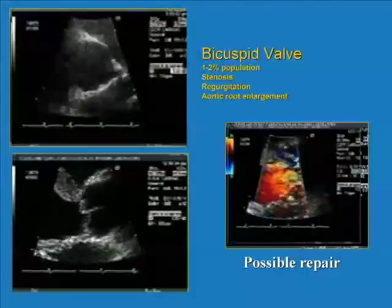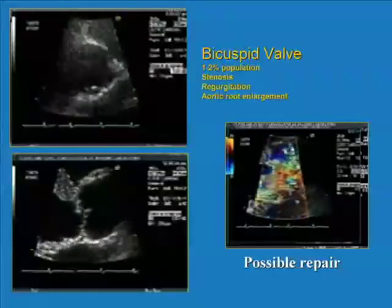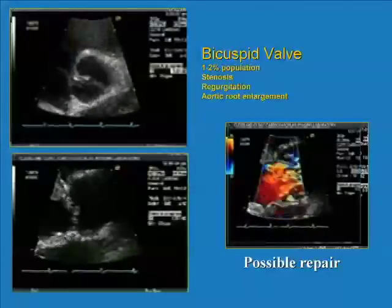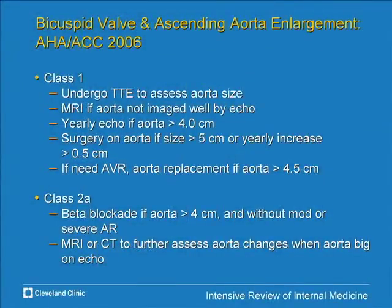Most importantly, bicuspid valve is often associated with aortic root enlargement, which can lead to dissection — one of the commoner causes. The ACC/AHA guidelines recommend careful assessment of aorta size: follow yearly if greater than 4 cm regardless of valve disease; surgery for the aorta if it exceeds 5 cm or grows more than 0.5 cm in any given year; and if replacing the valve anyway, consider replacing the aorta if it's greater than 4.5 cm.